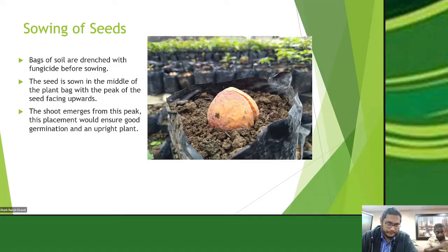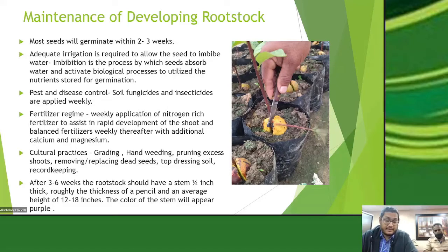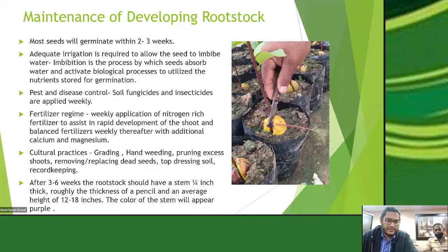Once the seed is sown properly, we expect germination in 2 to 3 weeks. At this time it's very important to ensure the plant receives adequate water, because the seed needs to imbibe — meaning absorb water — so that stored nutrients and enzymes activate and cause the growth process to begin. The nutrients within the seed then feed the shoot and root system to produce a young plant.